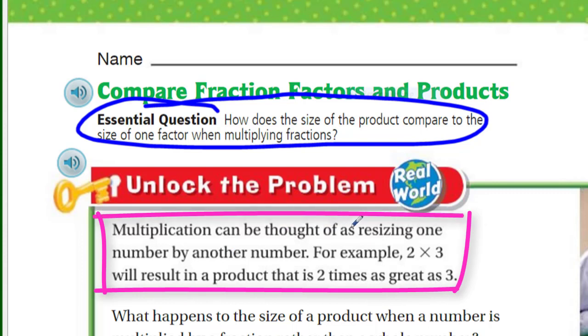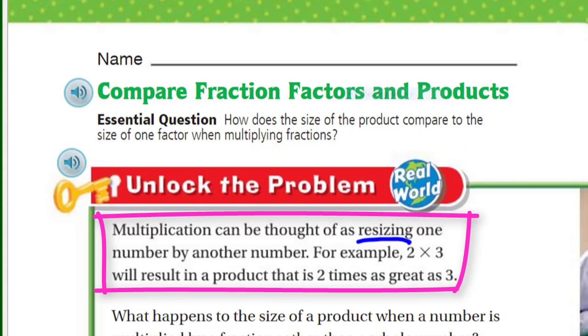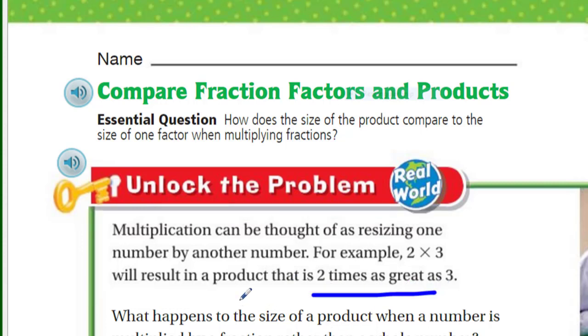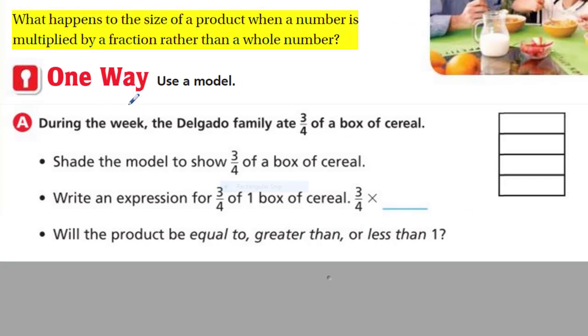Multiplication can be thought of as resizing one number by another number. Think about it. For example, you have 2 times 3, will result in a product that is 2 times as great as 3. When you say I have double what you have, you're saying you have something that's 2 times greater than that number. You're resizing it, you're making the size larger. Here's one thing that we can look at: What happens to the size of a product when a number is multiplied by a fraction rather than a whole number? I would like to know, please tell us more.